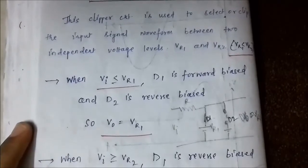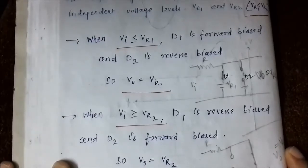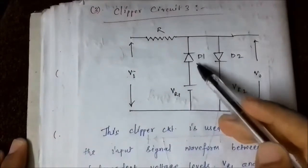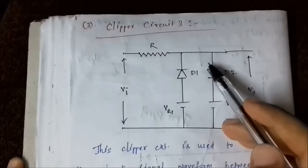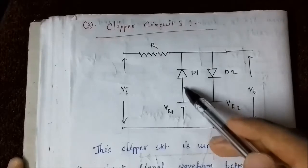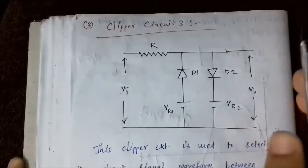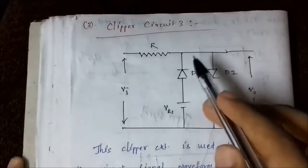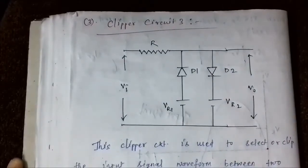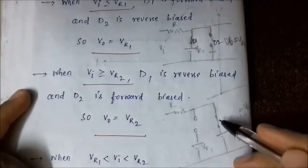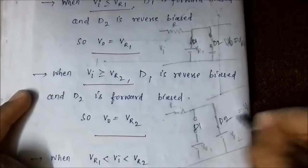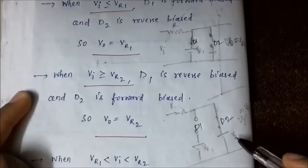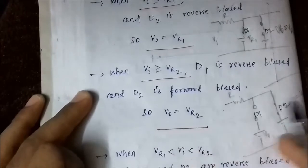When the input voltage is greater than V_R2, it is automatically greater than V_R1 as well. The opposite of case one occurs: diode D1 has its N-type end at a higher potential than its P-type end and is reverse biased and open-circuited, while diode D2 has its P-type end at a higher potential and its N-type end at a lower potential, so it is forward biased and short-circuited. The output voltage equals V_R2.